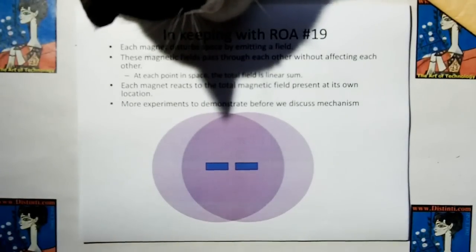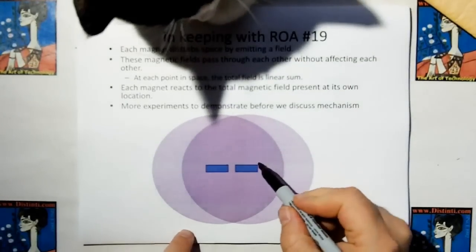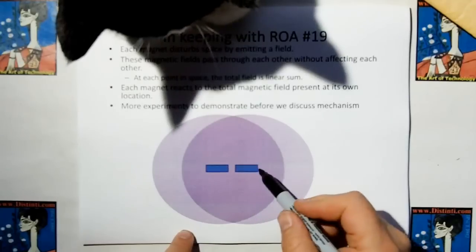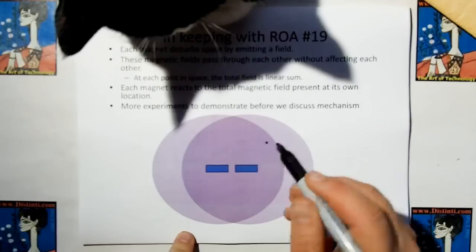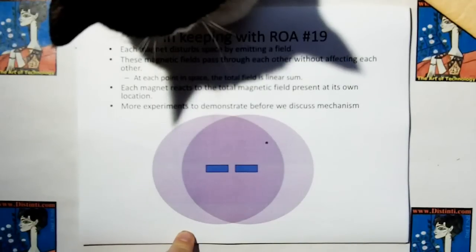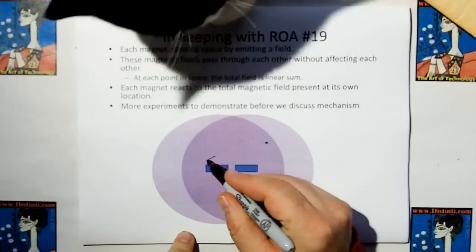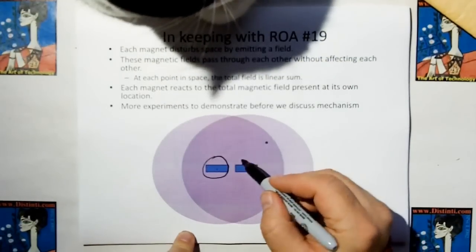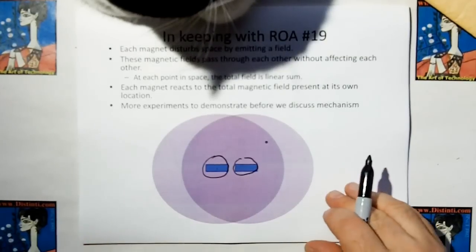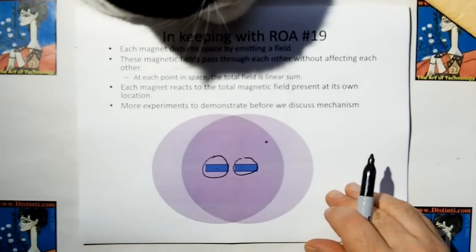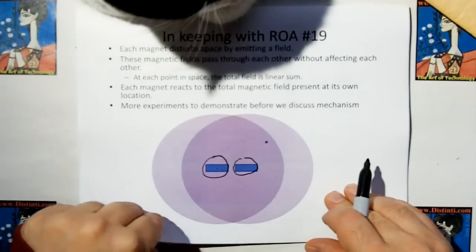Our modeling that engineers use requires that the field components of light add without interfering with each other. They add linearly for our models to work. So in keeping with rule of acquisition 19, the way we have to view this is each magnet generates a magnetic field. At each point in space, these magnetic fields sum linearly, and this magnet reacts to the total magnetic field present in its area, and this magnet reacts to the total magnetic field present in its area, independent of what the other one's doing. Otherwise, we'd be violating Newton's third law.